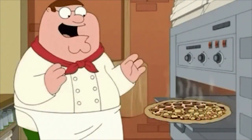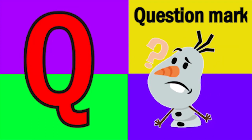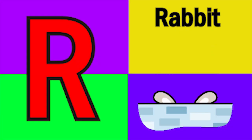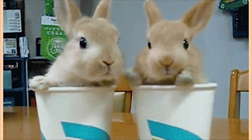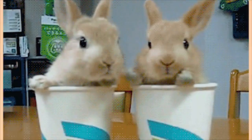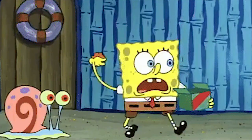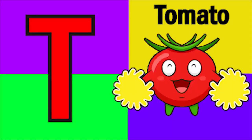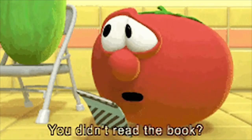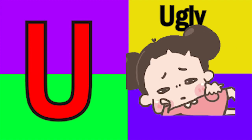P for pizza. Ba, ba. R for rabbit. Ba, ba. S for snail. Sa, sa. T for tomato. Da, da.